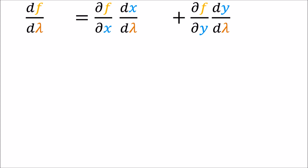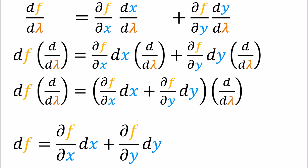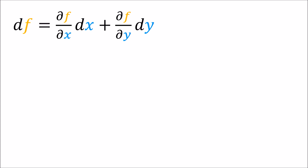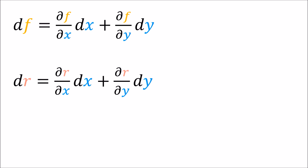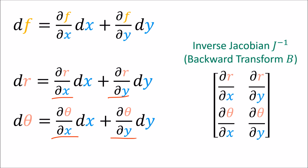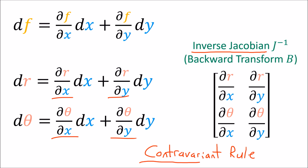In the last video, we showed that any co-vector field df can be broken up into linear combinations of basis co-vector fields — we can expand df into a linear combination of dx and dy. Since df can be any co-vector field, that means we can also expand dr and dθ into linear combinations of dx and dy. The coefficients we get are the entries of the inverse Jacobian matrix, with the polar coordinates on top and the Cartesian coordinates on the bottom — also called the backward transform. Because we use the inverse Jacobian, or backward transform, to go from the old basis to the new basis, these equations describe a contravariant transformation rule.